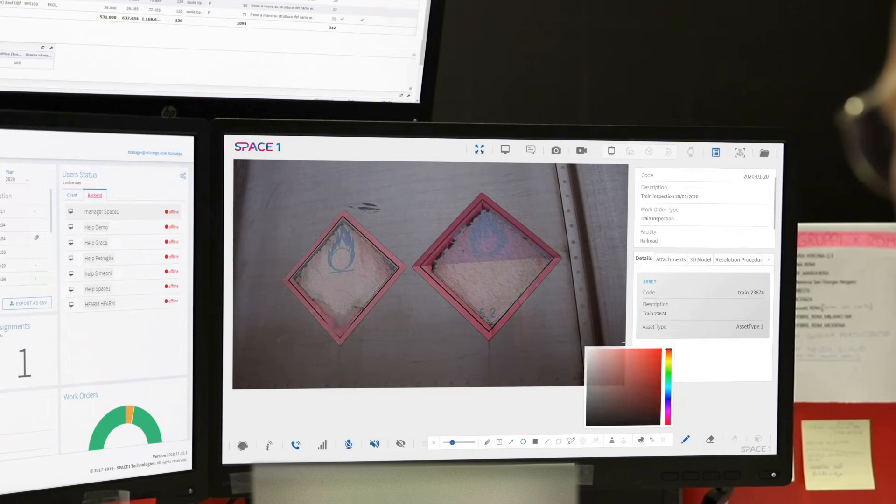It's ethyl acrylate, a class III flammable liquid. The UN number is 1917.